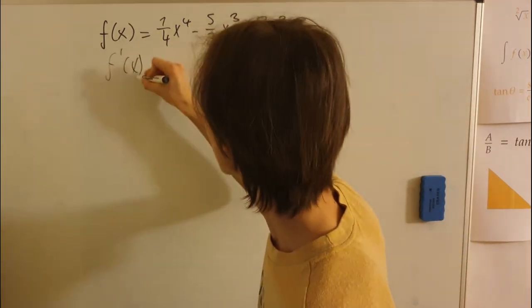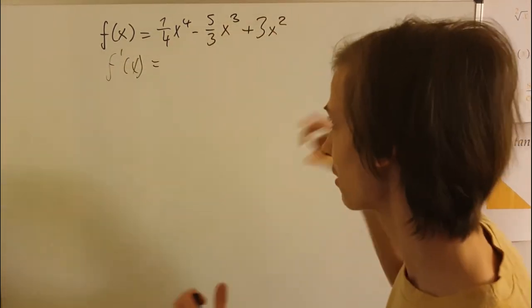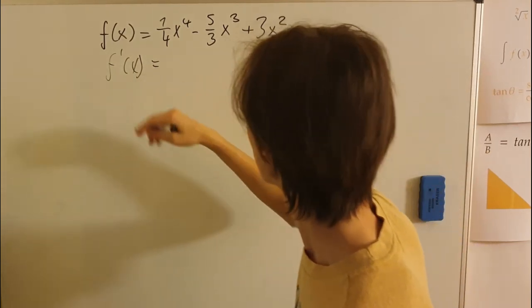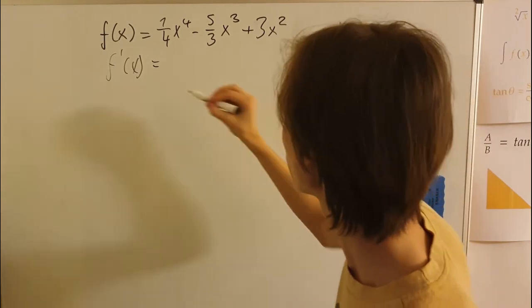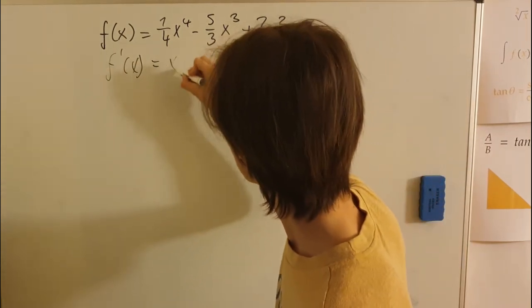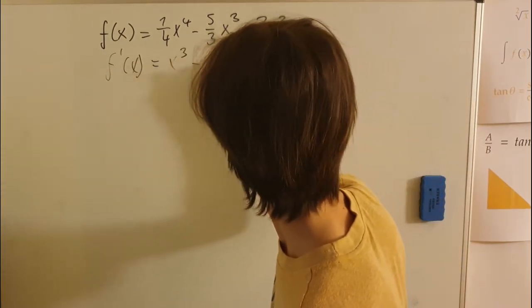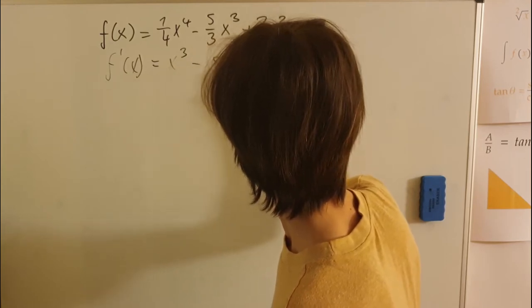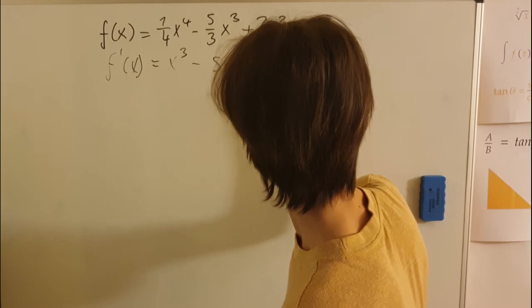And I'm not going to lie, this function was prepared so that the derivative would match nicely with what we need and then it would be nicely distributable, but we will see that later. So the derivative of this is x cubed minus 5x squared plus 6x, okay?